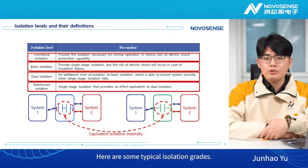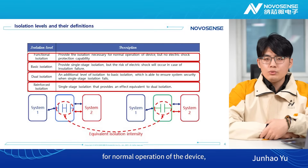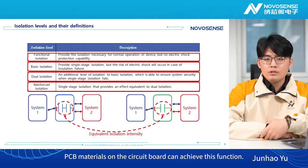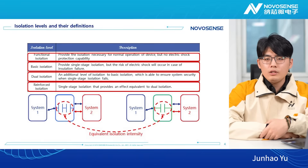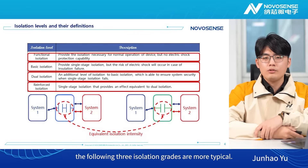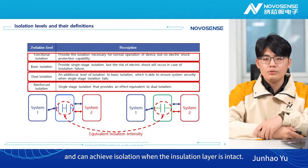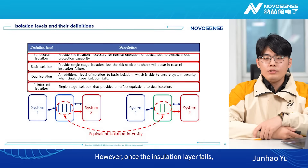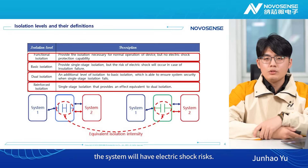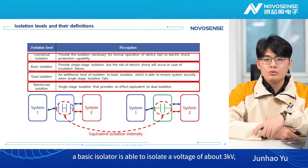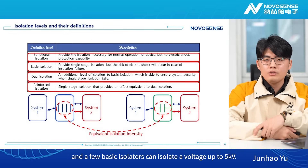Here are some typical isolation grades. Functional isolation only enables the isolation necessary for normal operation of the device, but does not provide electric shock protection — PCB materials on the circuit board can achieve this function. For systems involving dangerous high-voltage, the following three isolation grades are more typical. Basic isolation provides single-stage isolation and can achieve isolation when the insulation layer is intact. However, once the insulation layer fails, the system will have electric shock risks. Generally, a basic isolator is able to isolate a voltage of about 3 kV, and a few basic isolators can isolate a voltage up to 5 kV.